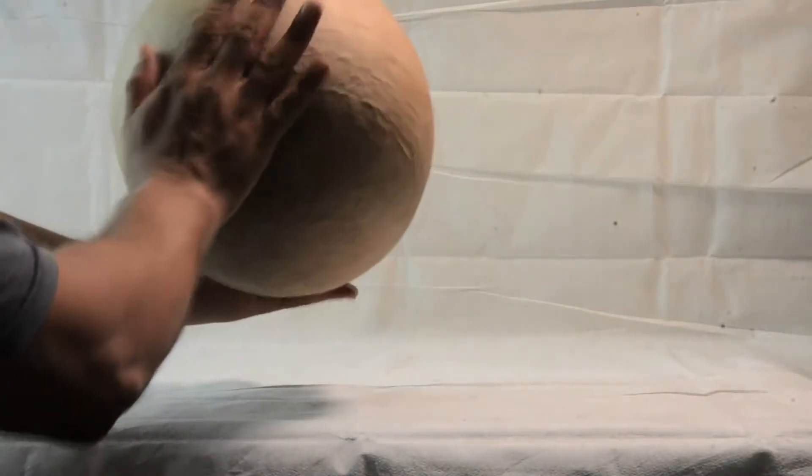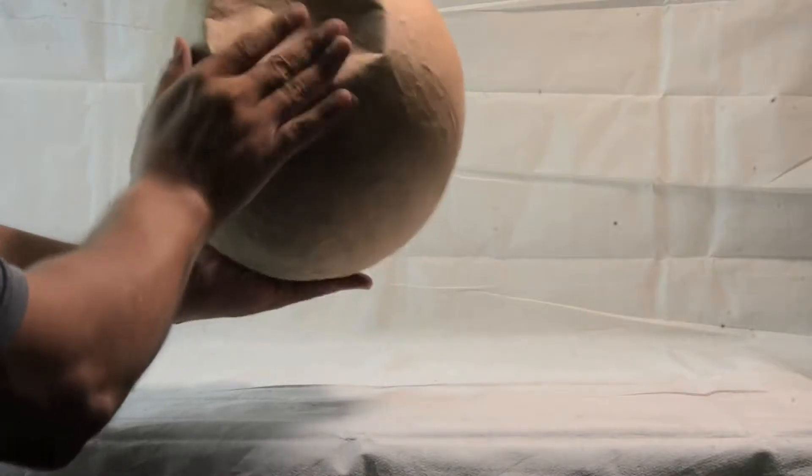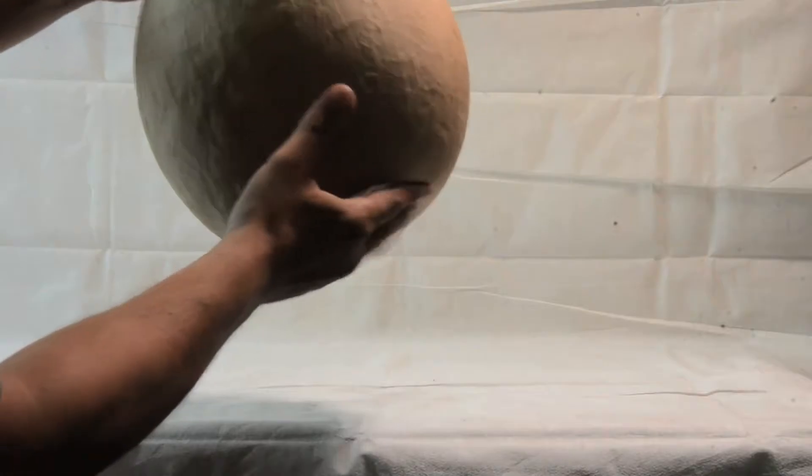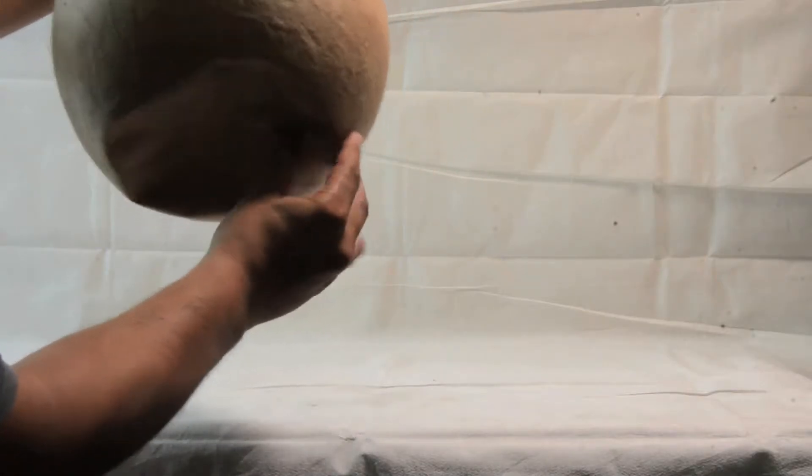In episode one I showed you how to make a paper mache balloon. I have one that I've made with four layers of mache. First step you're going to want to do is push in the bottom so that way it can stand flat and even.